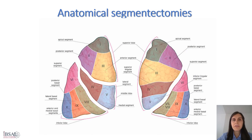In comparison with lobectomy, anatomic sublobar resections are considered technically more challenging due to the wide variety of possible segmentectomies and the possibility of anatomic variation in pulmonary arteries, veins and bronchial tree.